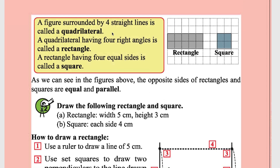A quadrilateral is a figure surrounded by four straight lines. A quadrilateral having four right angles is called a rectangle. A rectangle having four equal sides is called a square — when the length and breadth are equal, that rectangle is called a square.